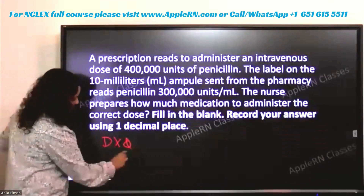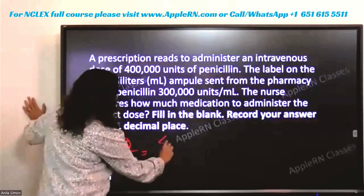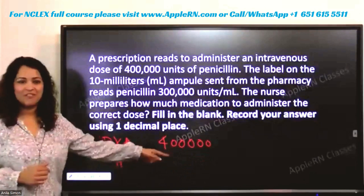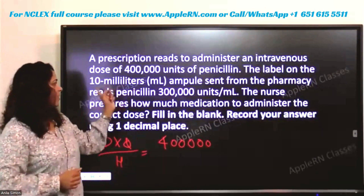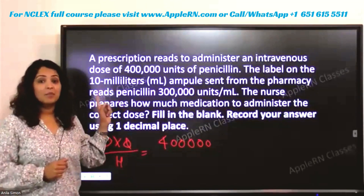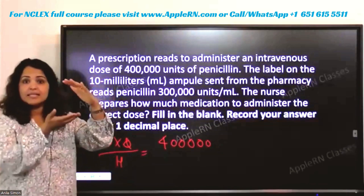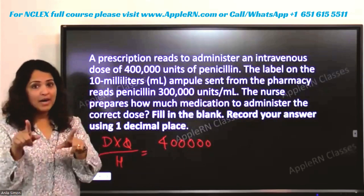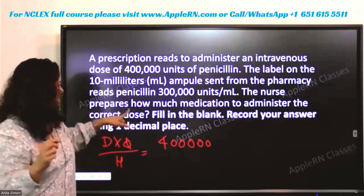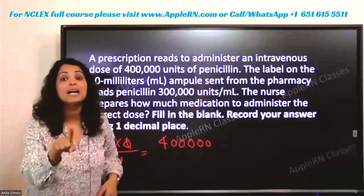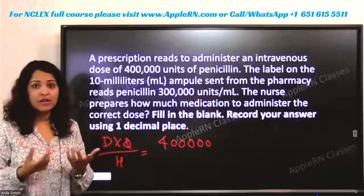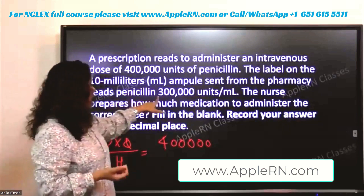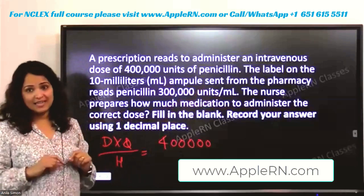Desired is 400,000 divided into quantity divided by have. So desired is 400,000. The label on the 10 ml ampule — this is where there may be confusion. They sent a 10 ml ampule, but the ampule label says there is 300,000 units per ml. So what do you have? You have a 10 ml ampule, but what you're actually working with is 300,000 per ml — that's what it is, it's per ml.